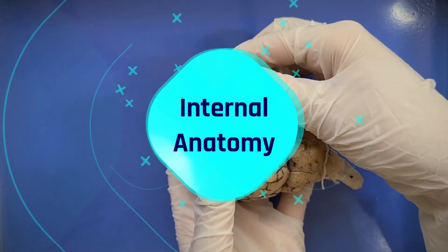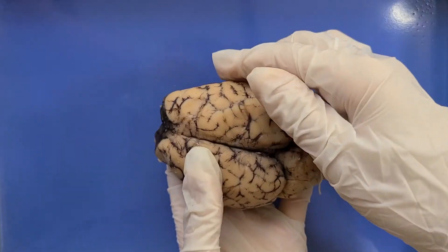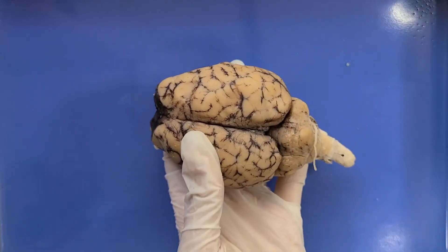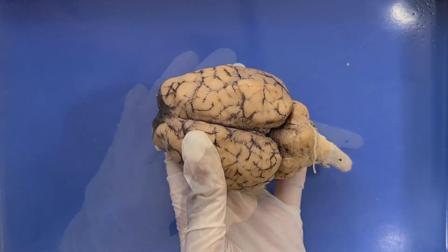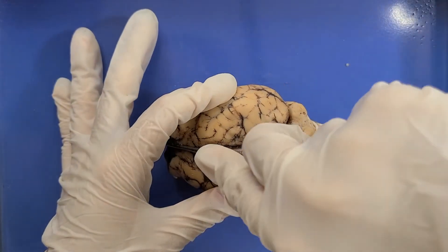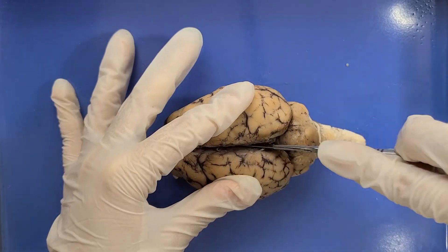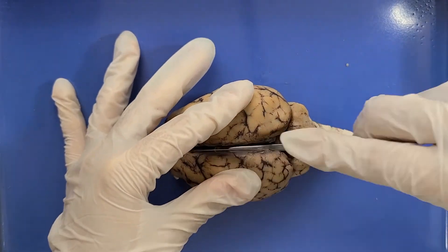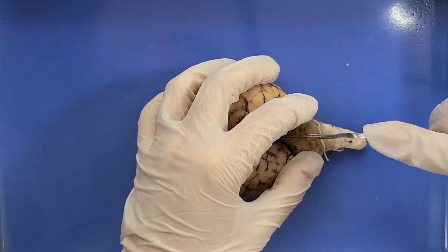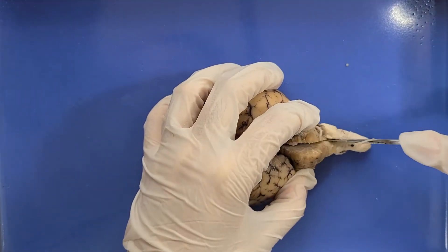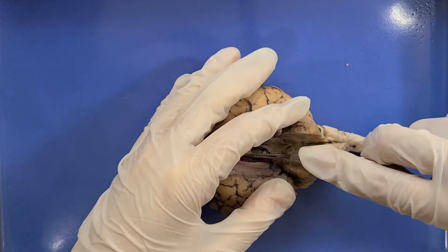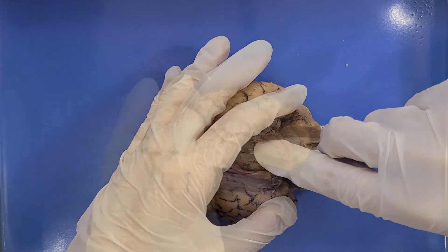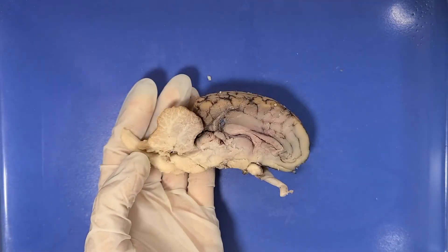Now let's look at the internal anatomy. I'm going to cut through the corpus callosum and separate the two hemispheres. I'll take a scalpel and cut gently down the center line, cutting through the cerebellum as well. Now let's look at one of the halves.